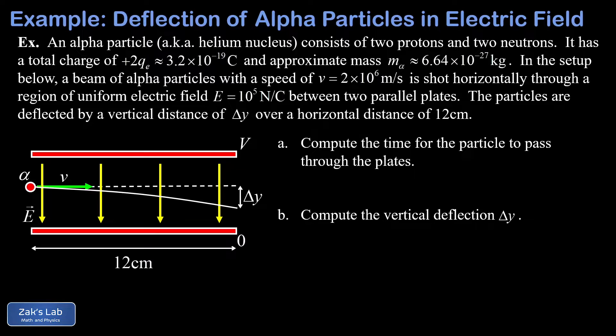Alpha particles, which is actually the same thing as a helium nucleus, consist of two protons and two neutrons, giving them a charge of plus twice the elementary charge, 2QE.